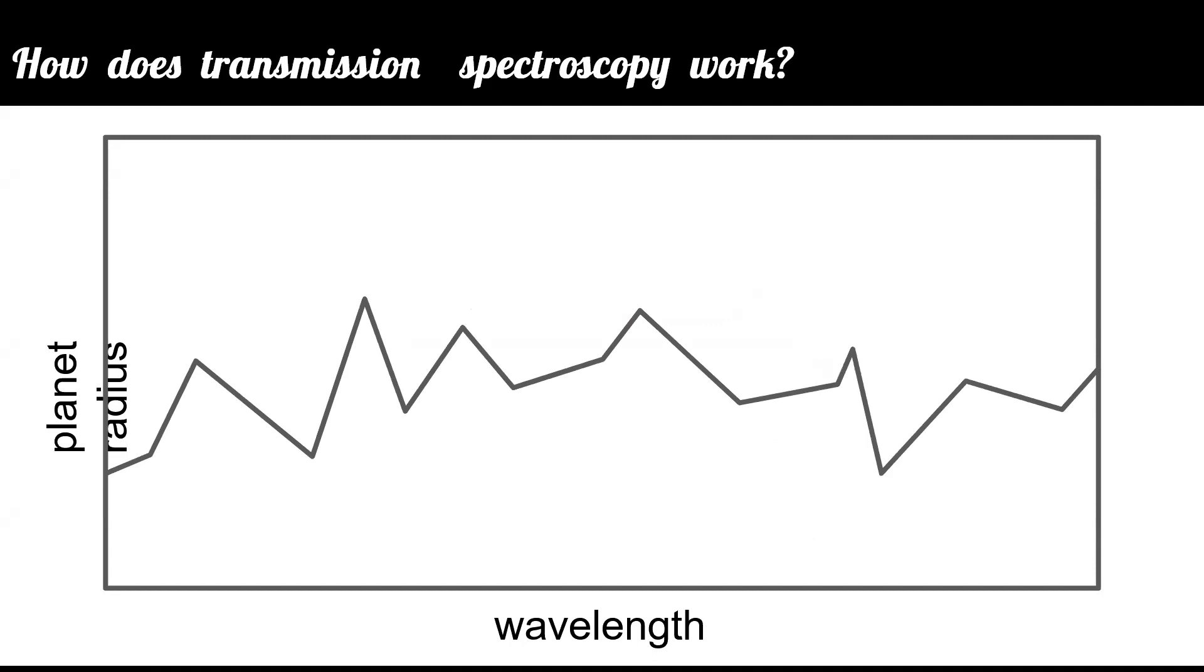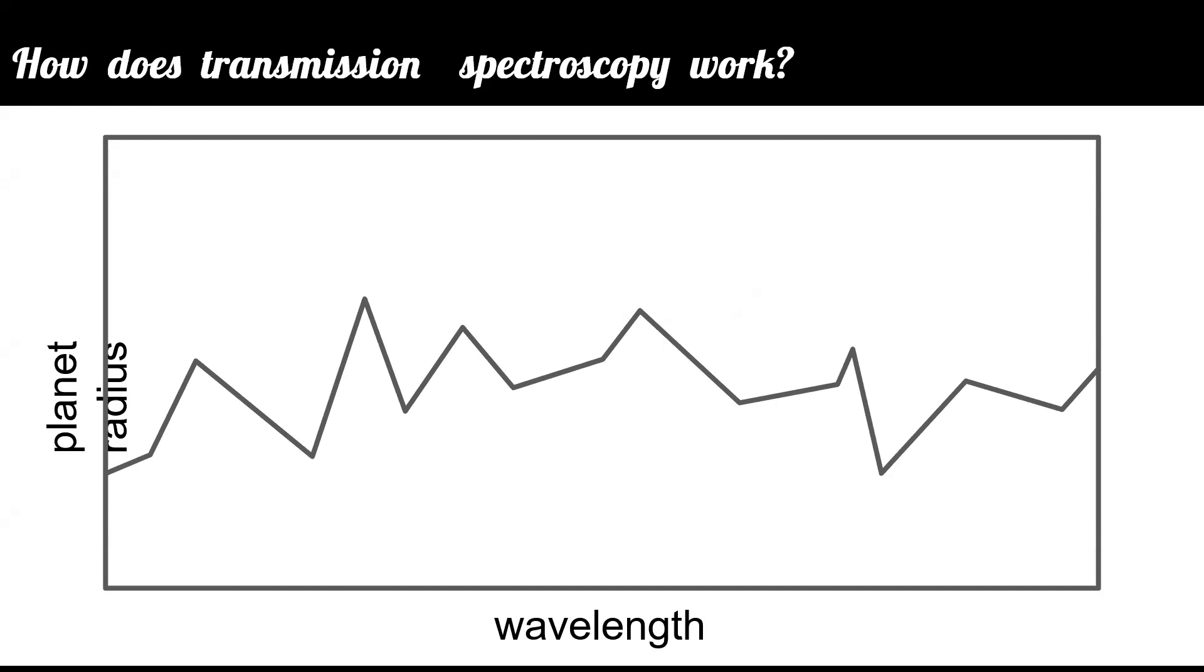One reason that this might happen is if there is an atmosphere and it's transmitting different amounts of the host star's light at different wavelengths. This is obviously a sketch and not real data, but from these kinds of observations at a number of different wavelengths, you can make a little plot, something like this, where the y-axis would be the planet radius, what the radius appears to be, and the x-axis would be the wavelength. And the shape of this spectrum would tell you a lot of information about the exoplanet's atmosphere.